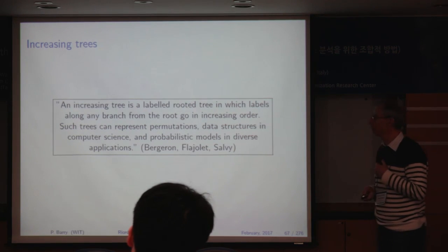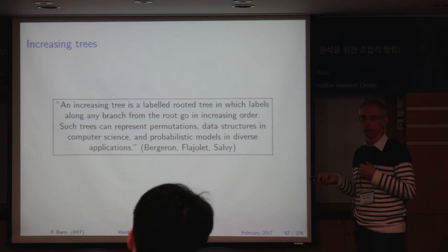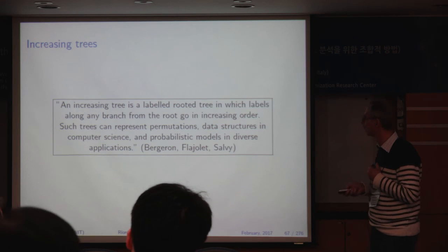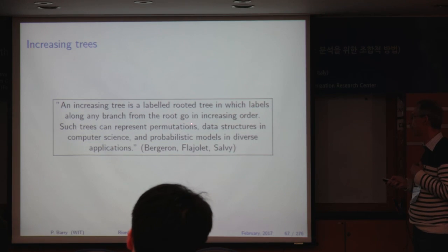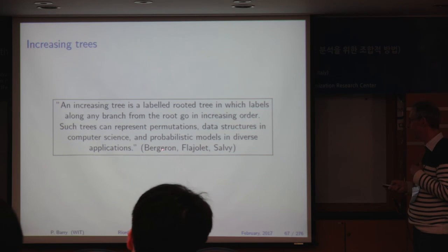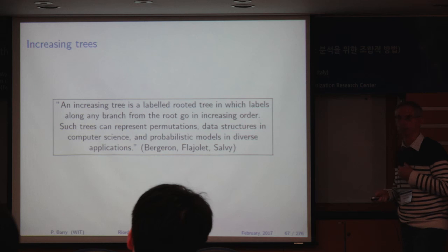In the next lecture, we'll look at the link between increasing trees and exponential Riordan arrays. An increasing tree is a labelled rooted tree where the labels along any branch from the root go in increasing order — a quote from a paper by Flageolet and colleagues. Such trees can represent permutations, data structures in computer science, and probabilistic models in diverse applications. Thank you.